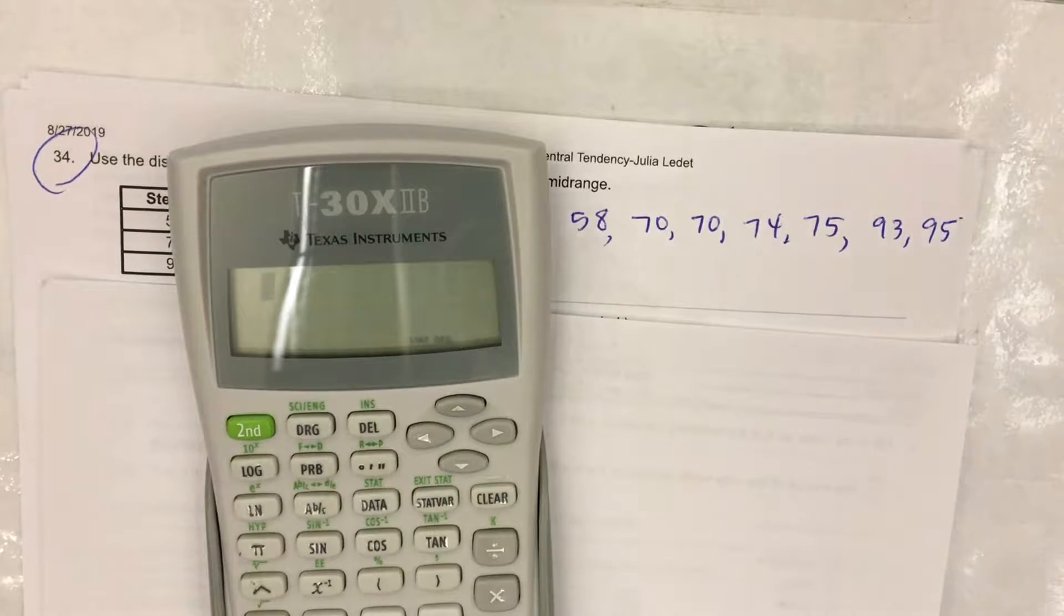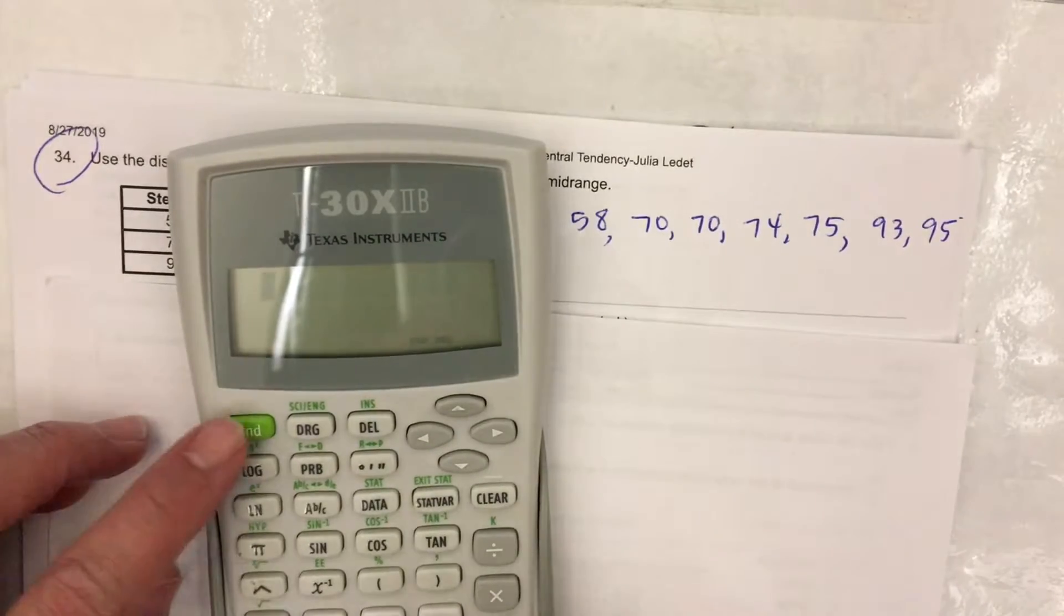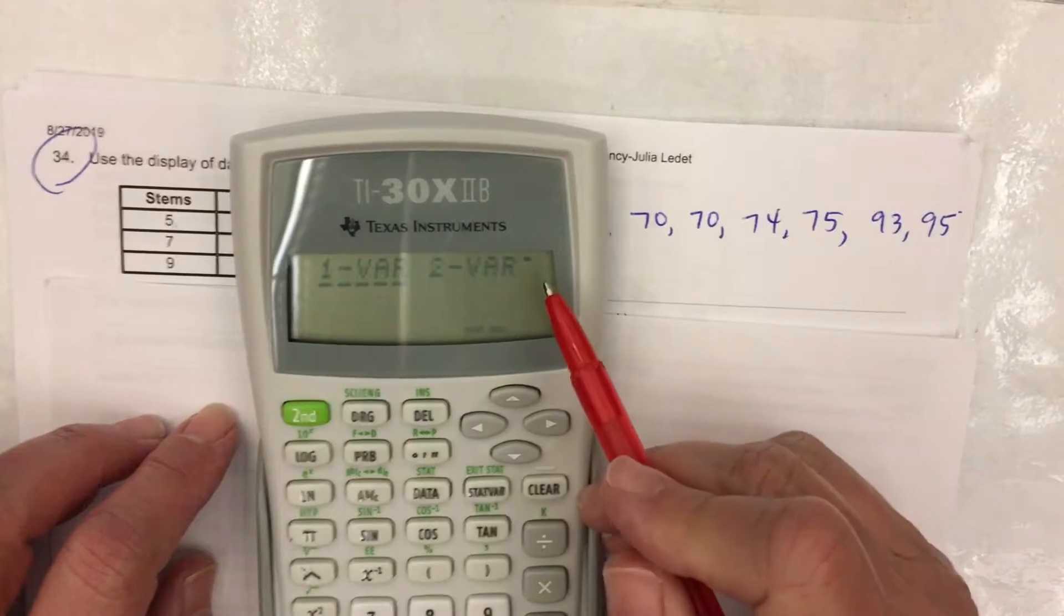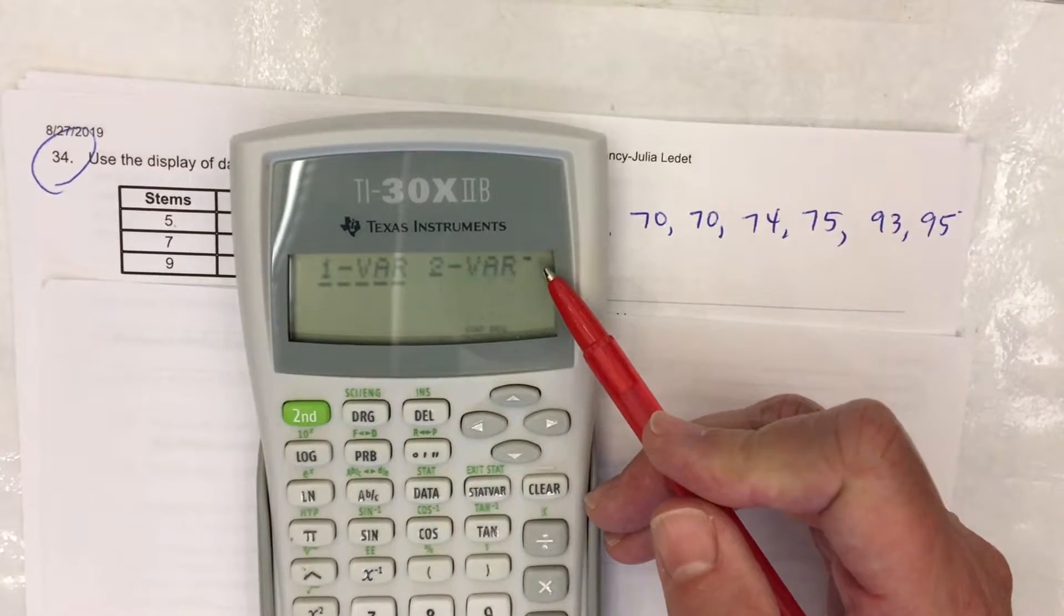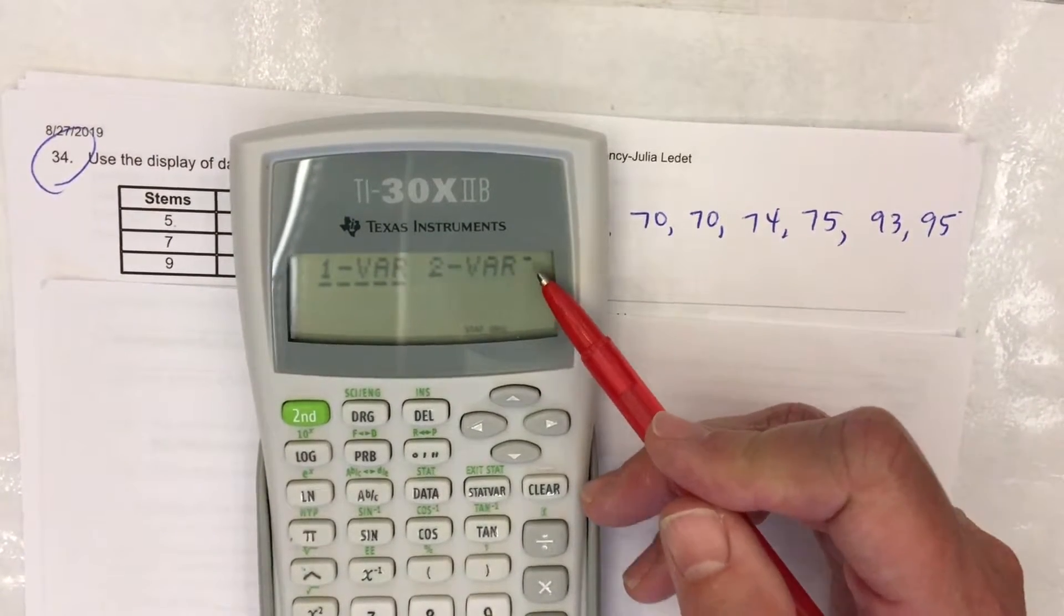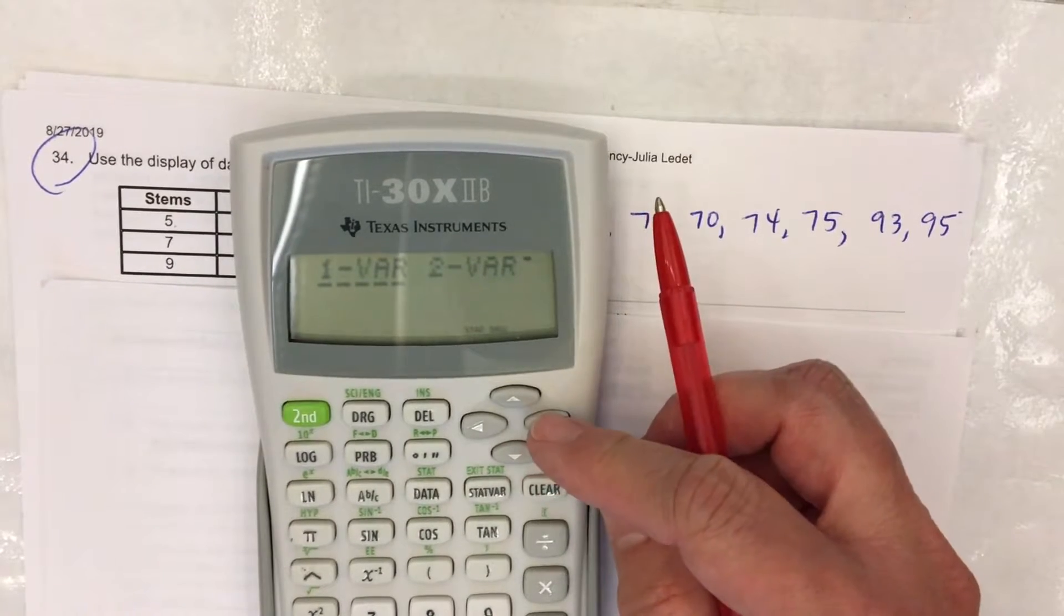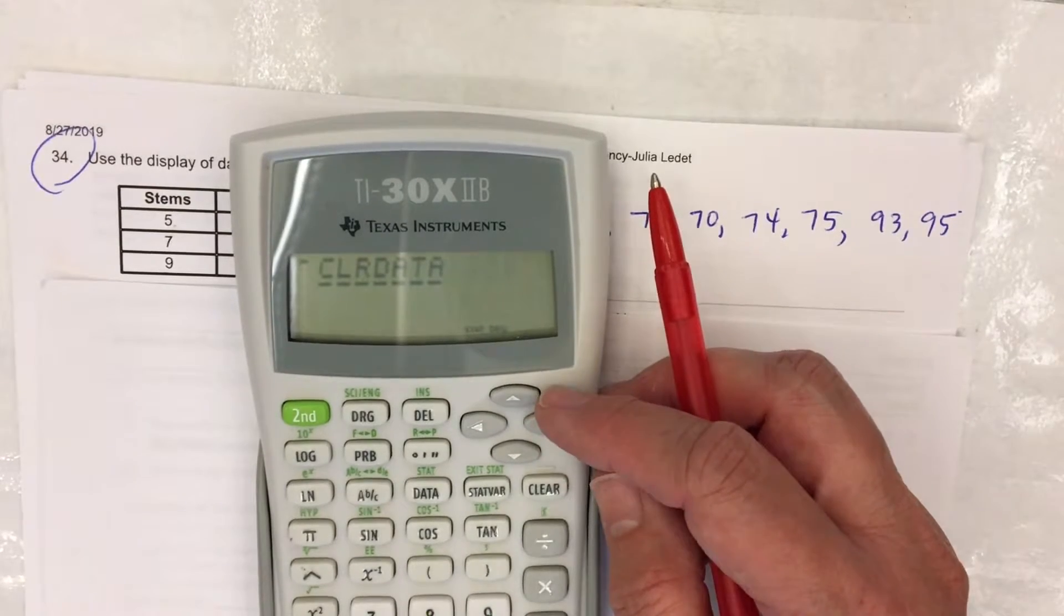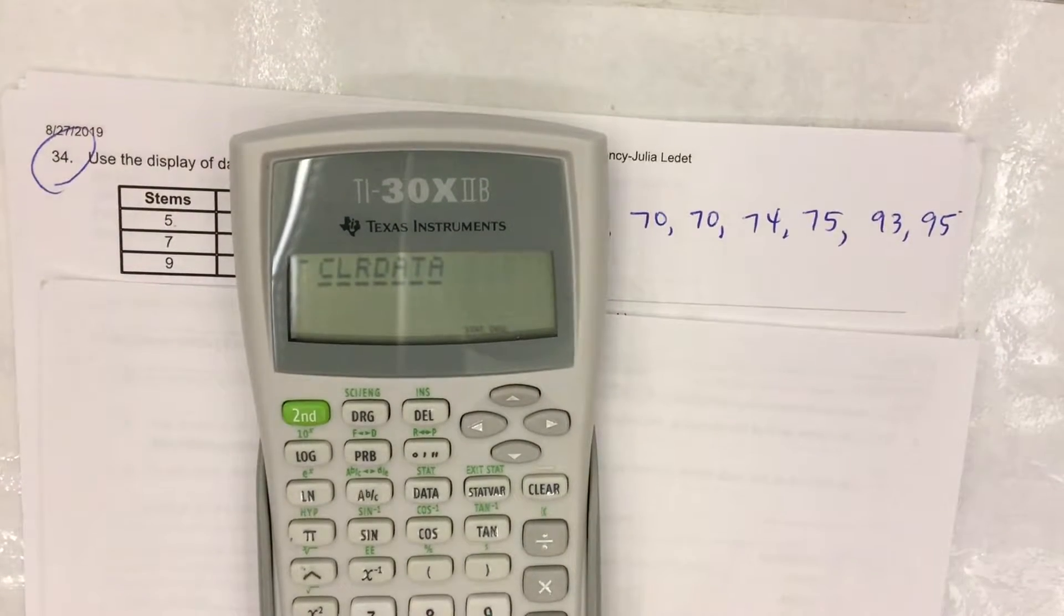To play it safe, I want you to clear the data. Now we just put it in statistics mode for the first time. The data is going to be clear, but I'm going to show you how to do that. I'll put second stat. See that little arrow after two variable statistics. There's more. Use the arrow key to go over. Clear data is underlined. Press equals.